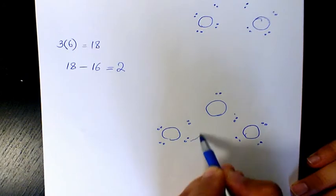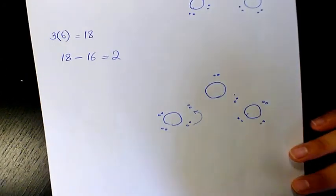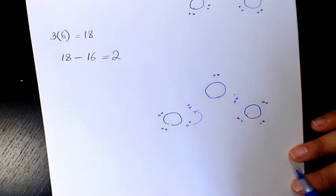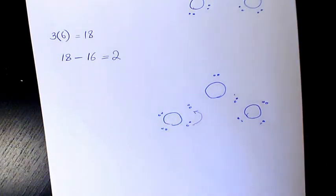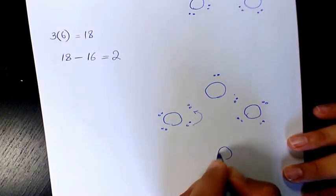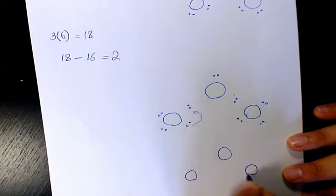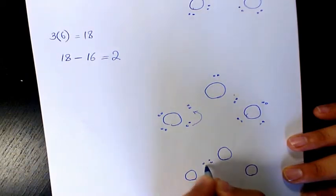So what I need to do, I need to move these two electrons to make it as a bonding electron. So instead of two shared electrons, we're going to have four shared electrons between these two atoms. So we're going to have a double bond in here.